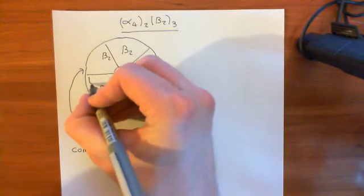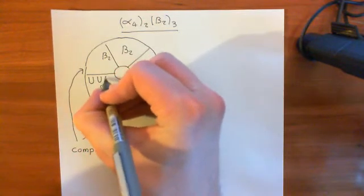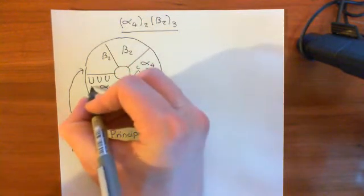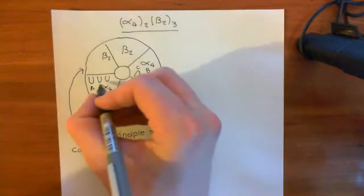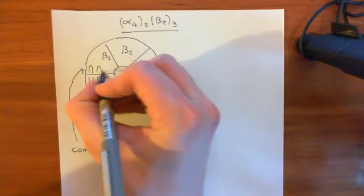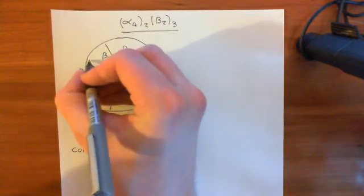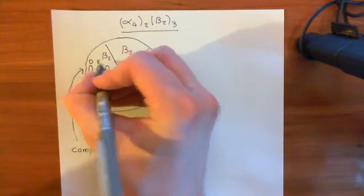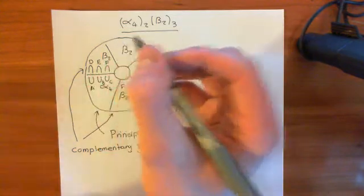And then alpha-4 will then have the A, B, and the C loops. So here's A, B, C. And then again, this beta-2 here will have the D, E, and F beta-pleated sheets, although we call them loops still. Okay, so let me colour this in.